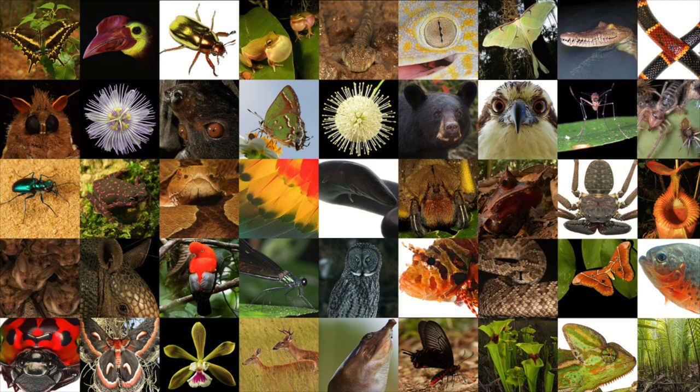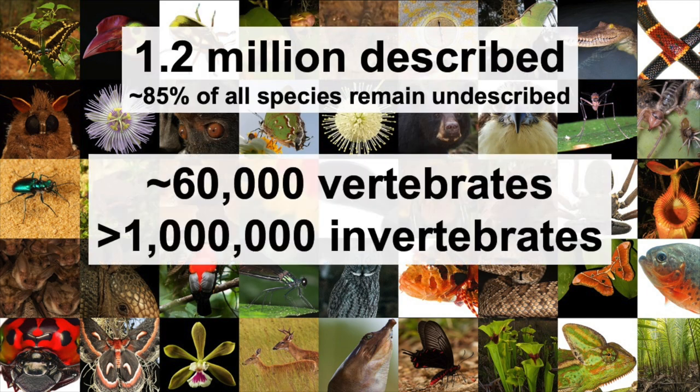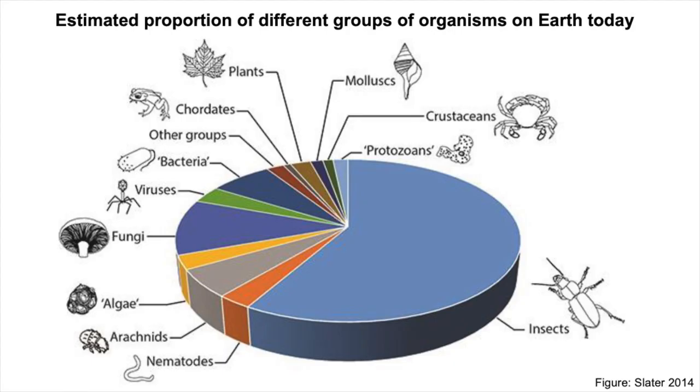When we talk about biodiversity, we're talking about the totality of life on Earth — all organisms and species, both described and undescribed. We don't know exactly how many species exist today, but recent estimates place the number of plant and animal species at about 8.7 million. Of these, we've only described about 1.2 million species. Of those described, about 60,000 are vertebrates, while more than a million are invertebrates — mostly insects. Insects compared to vertebrates are comparatively understudied, and it's estimated that more than half of all species alive today are insects.